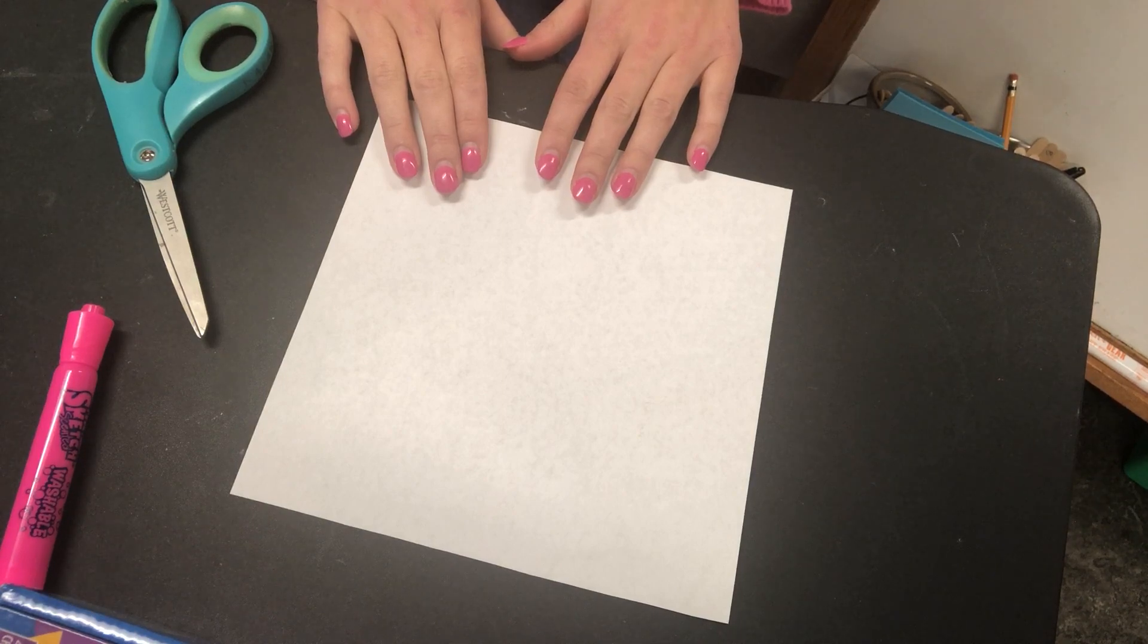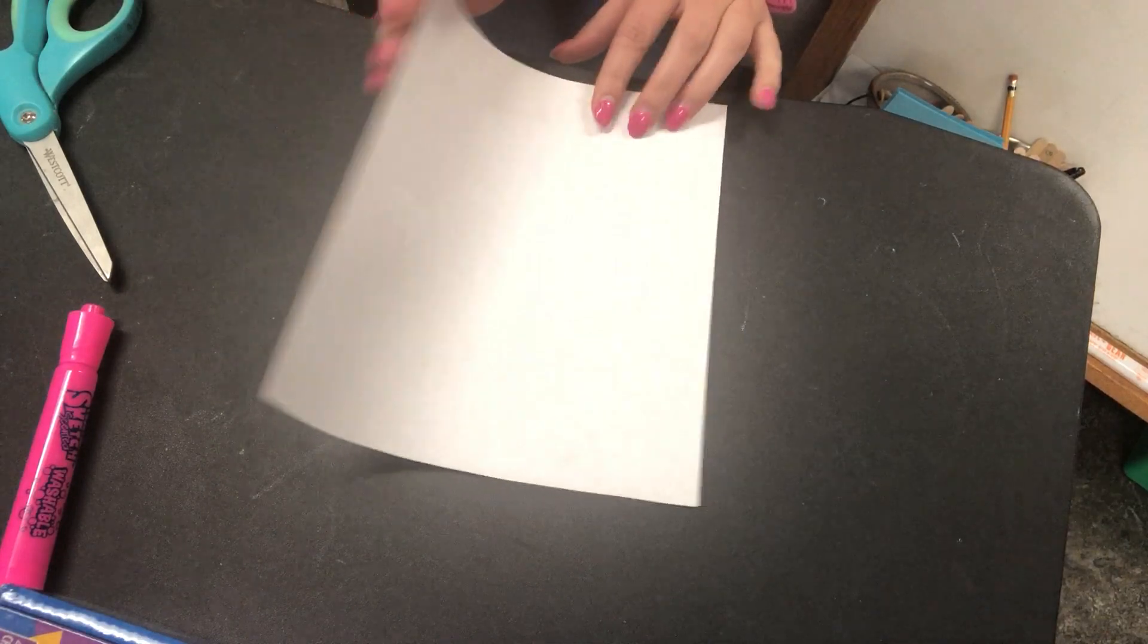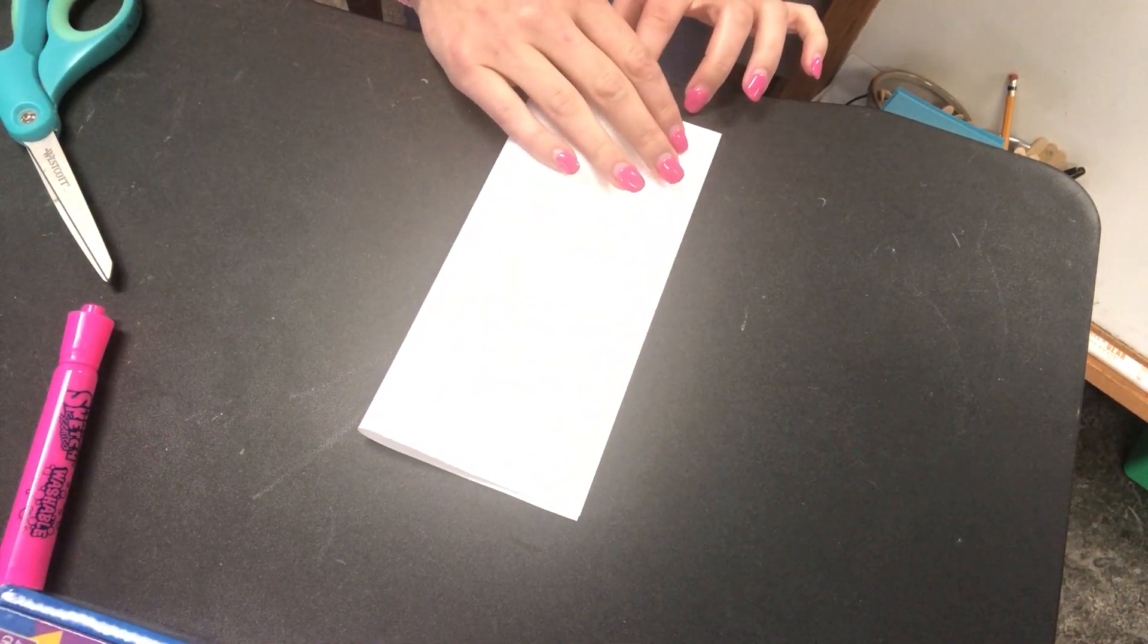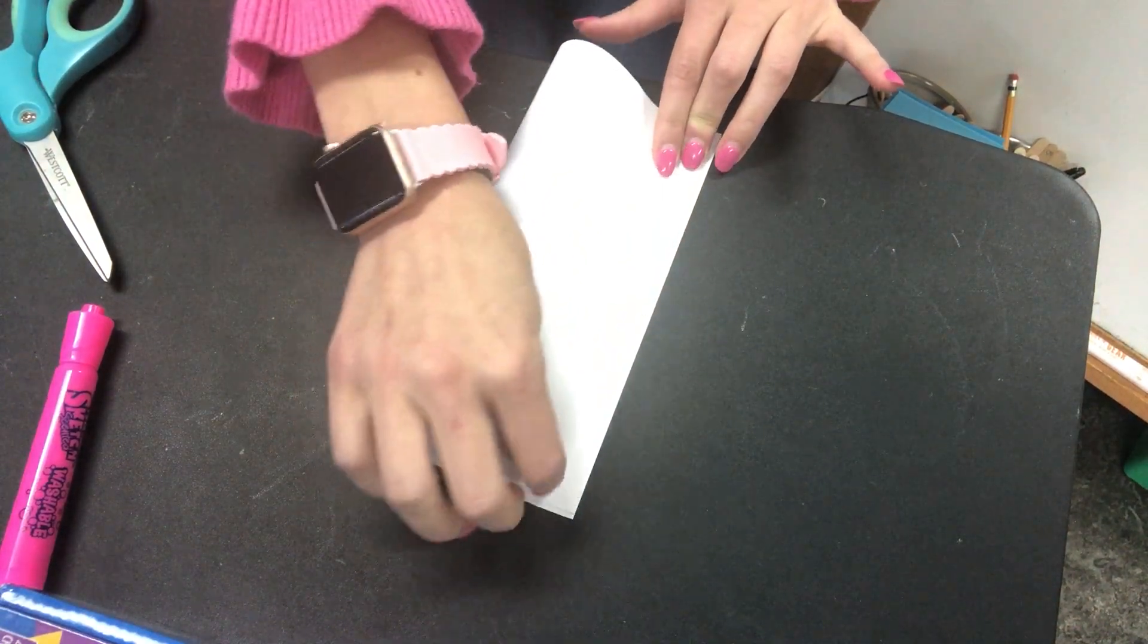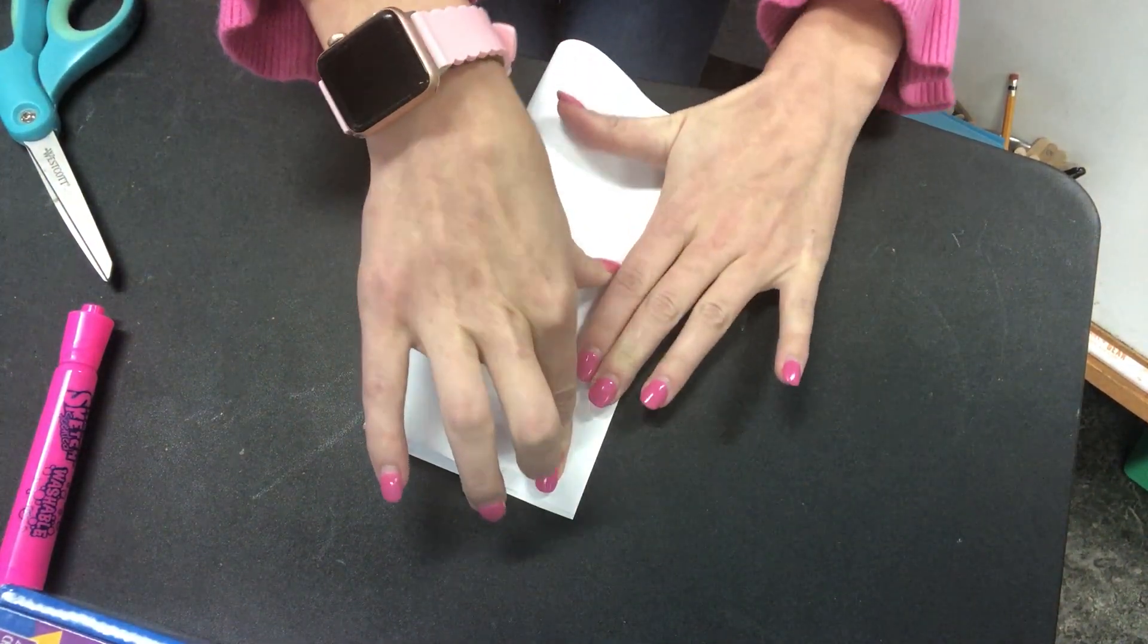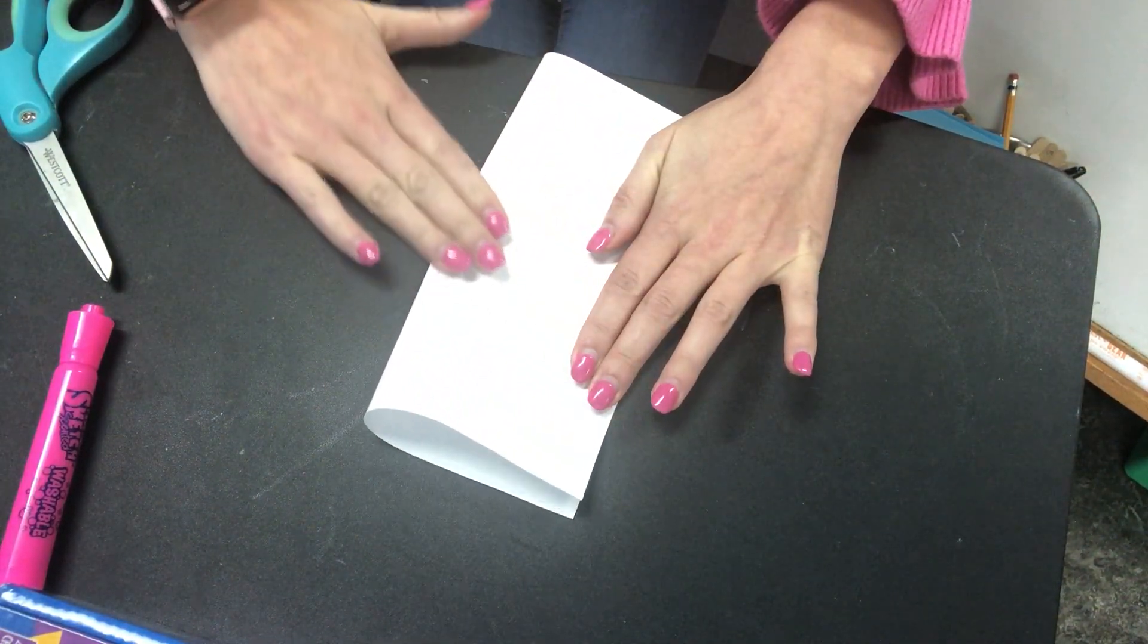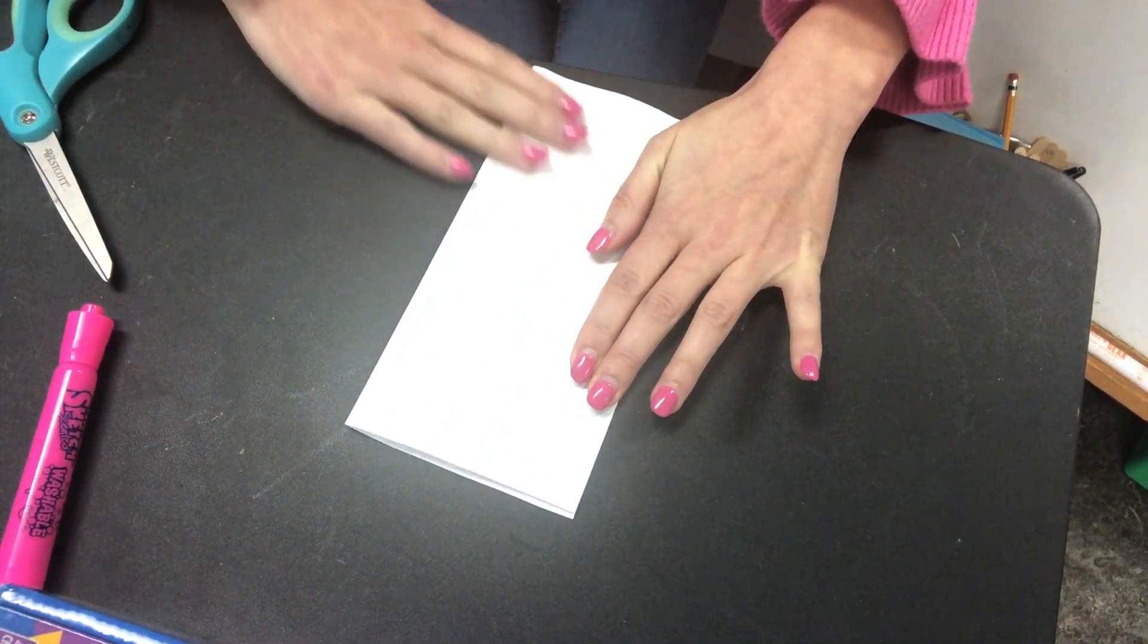First we're gonna fold it into a rectangle. So I'm gonna take the corners, I'm gonna match them each up, match up this corner and now I'll put my finger on that so it stays, match up the other corner. And then I like to use one hand to hold my corners in place and the other hand to squish it and make a crease on the other side so it's nice and flat.